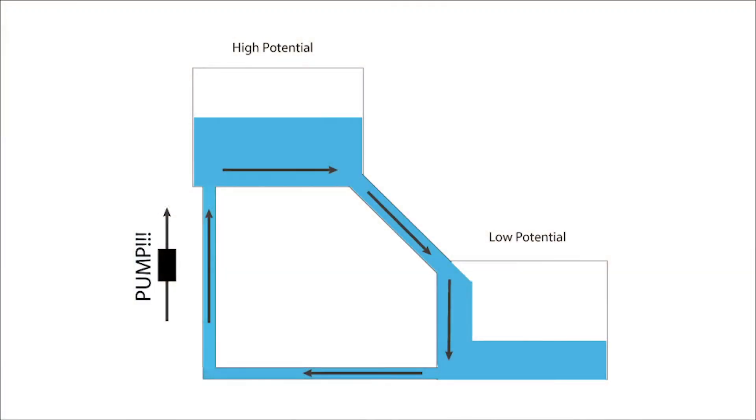If we want our water to keep flowing, we need to make it return to the higher tank in order to supply the additional energy provided by gravity. For this we need to provide a boost to the system. This is possible with a water pump.